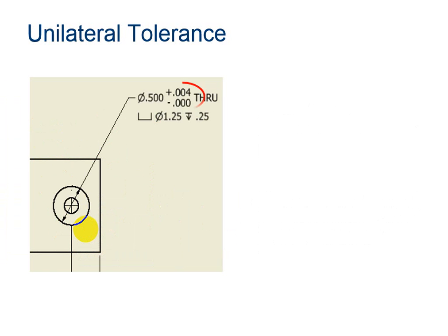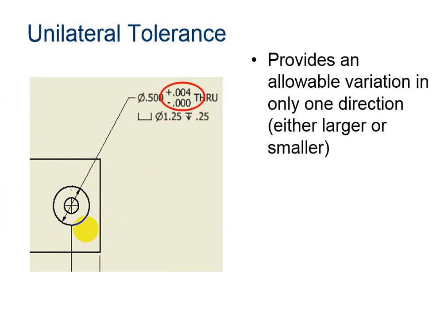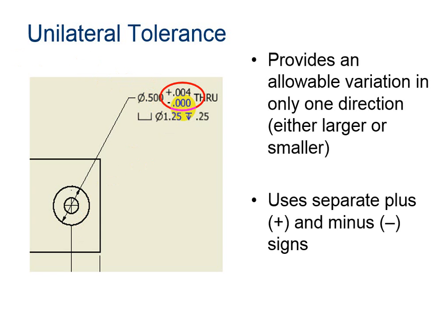Unilateral tolerance. Here is an example of unilateral tolerance. I can tell because it provides allowable variation in only one direction. Notice that .5 in this example can be bigger by .004, but it is not allowed to be any smaller. Unilateral tolerances will use a separate plus and minus sign.